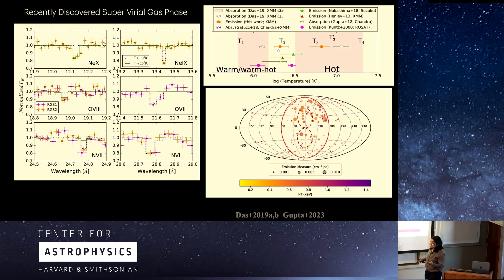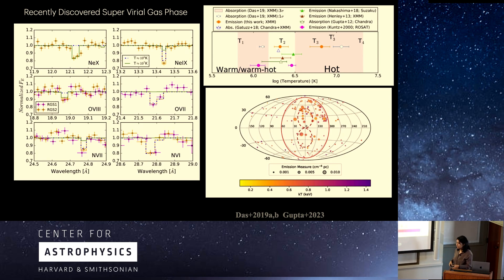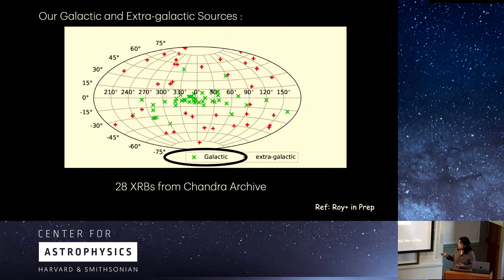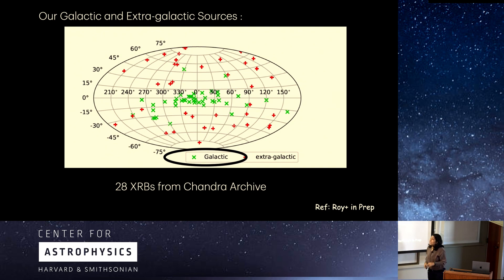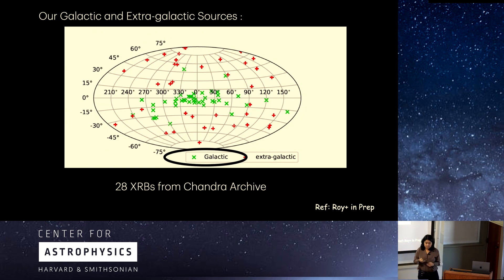I will move on to answering the question: where is this super virial gas? Because as we are seeing it along absorption columns, we don't know where it is located. For that, we have some galactic sources — X-ray binaries (XRBs) in our plane — and we would look for these same ions in those galactic sightlines: NeX, SiXIV, and SXVI.